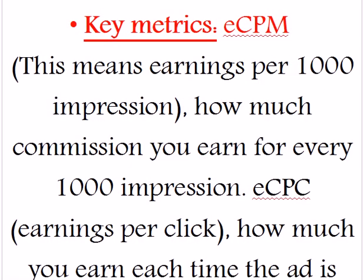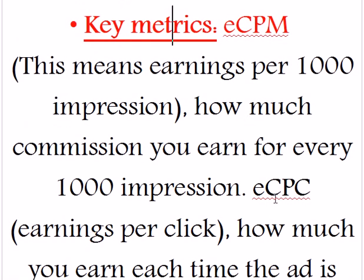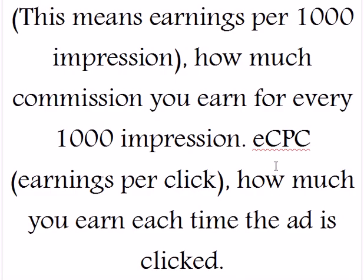Here's another term that you come across so often when you get involved in affiliate marketing: key metrics. Key metrics means earnings per thousand impressions — how much commission you earn for every one thousand impressions. In some cases you'll also come across ECPC — earnings per click.